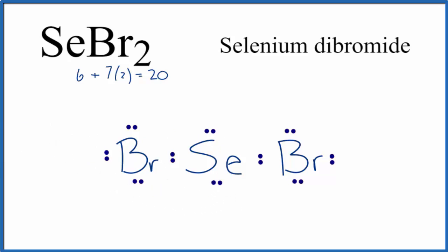So now we're using all 20 valence electrons. Each one of these atoms has an octet, has 8 valence electrons, and we're done. That's the Lewis structure for SeBr2.